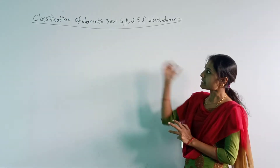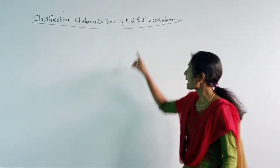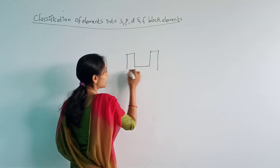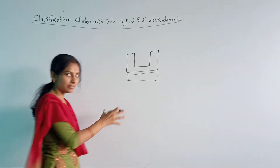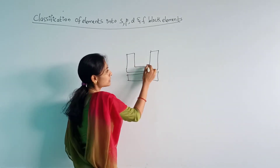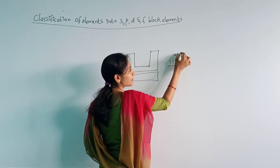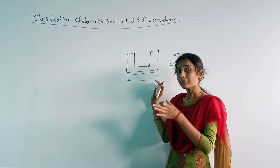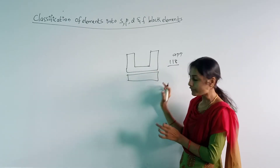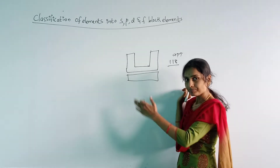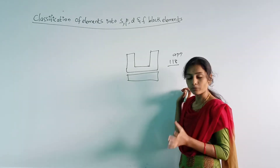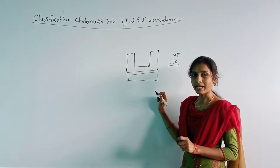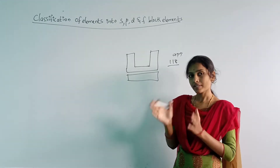In today's class, we will be classifying elements into S, P, D, and F block elements. A number of scientists played their role in building this periodic table. The table consists of approximately 118 elements, which are divided into blocks, groups, and periods. There are 18 groups and 7 periods in the table.